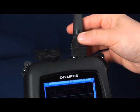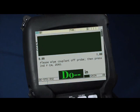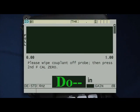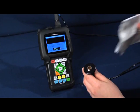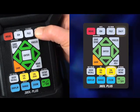To start, simply plug in any D790X series transducer. The gauge will prompt us to perform a do zero. This is done by wiping the couplant off the tip of the probe, then pressing the second function and the cal zero button.